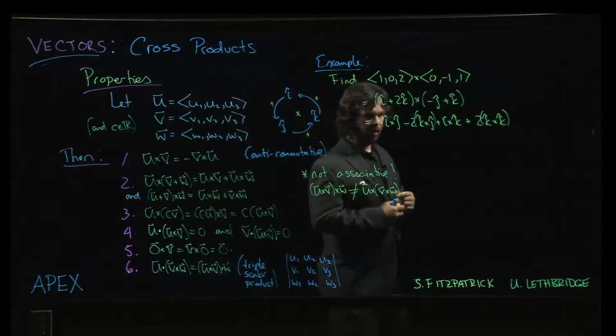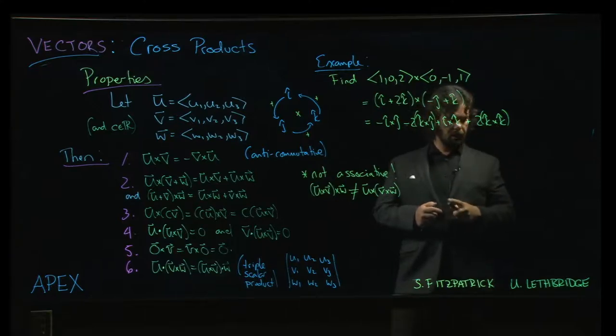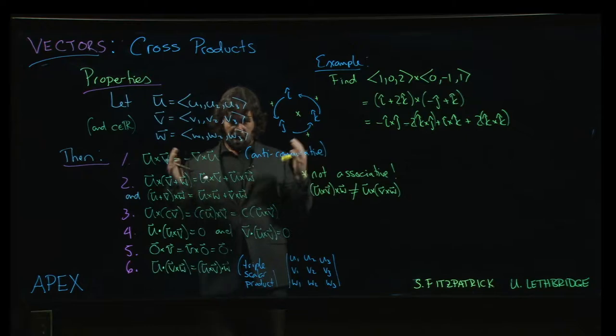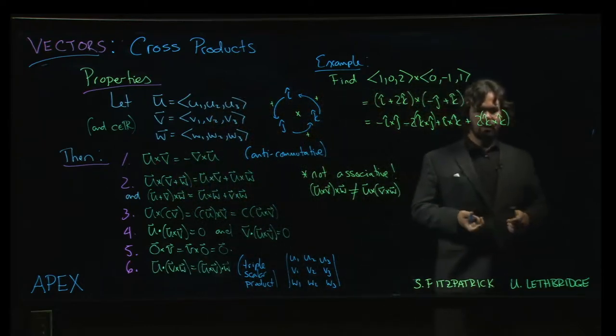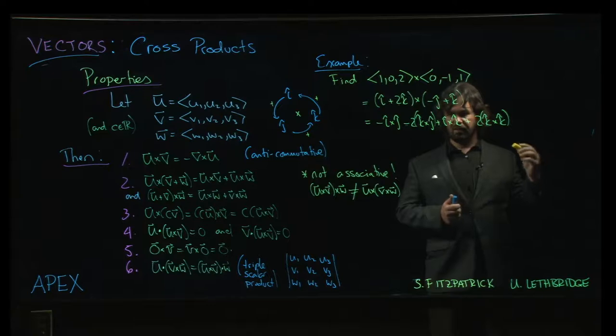And then you might say, well, what about k cross with k? What do you get there? Well, if you think about either definition of the cross product, whichever formula you want to use for computing the cross product, if you take the cross product of any two identical vectors, you're always going to get zero. Because those two rows are going to be the same. And so when you do the subtractions, everything is going to cancel out.